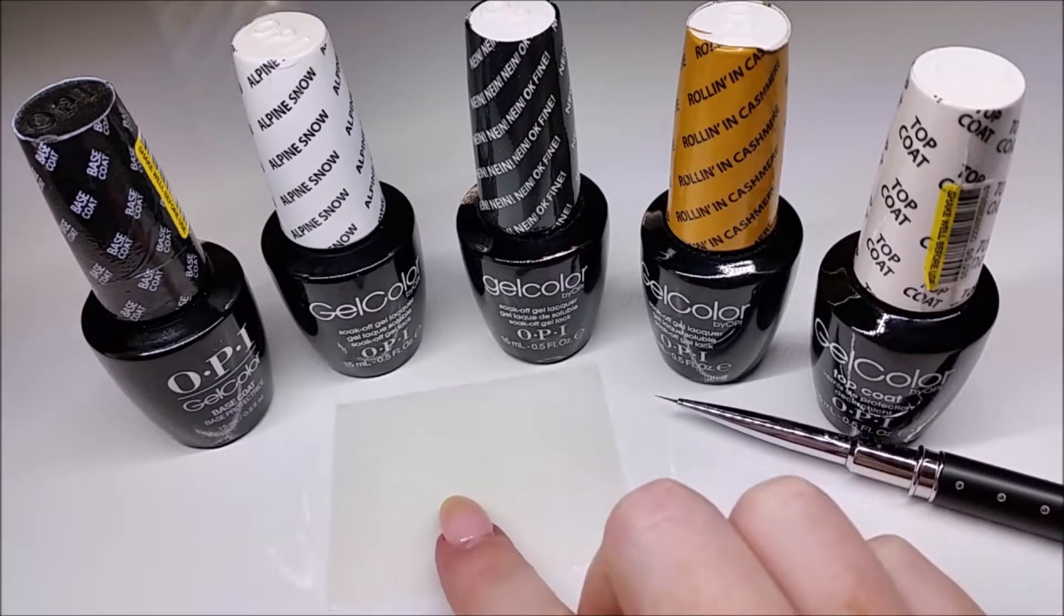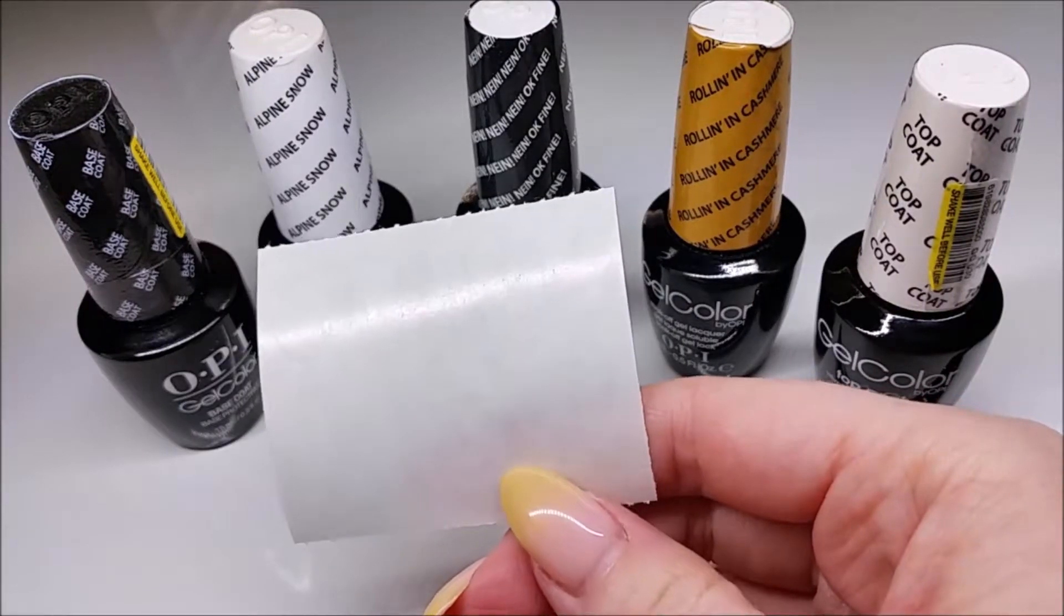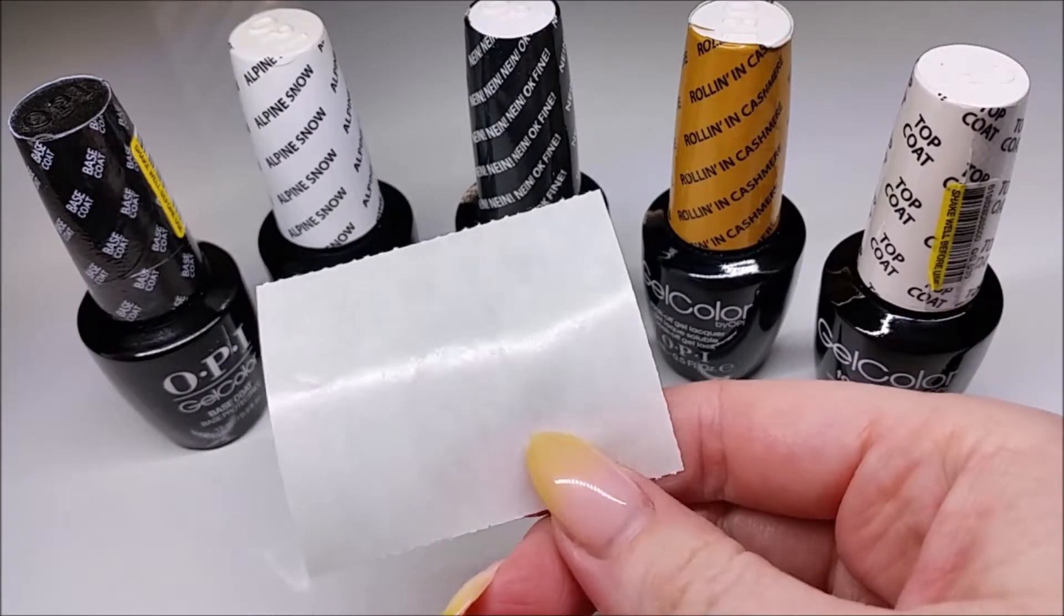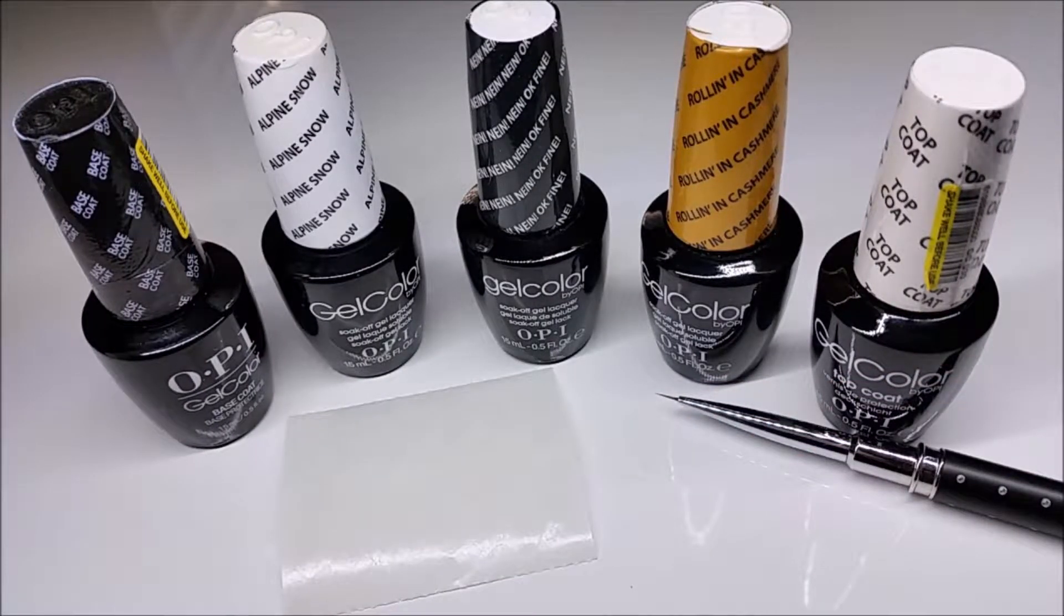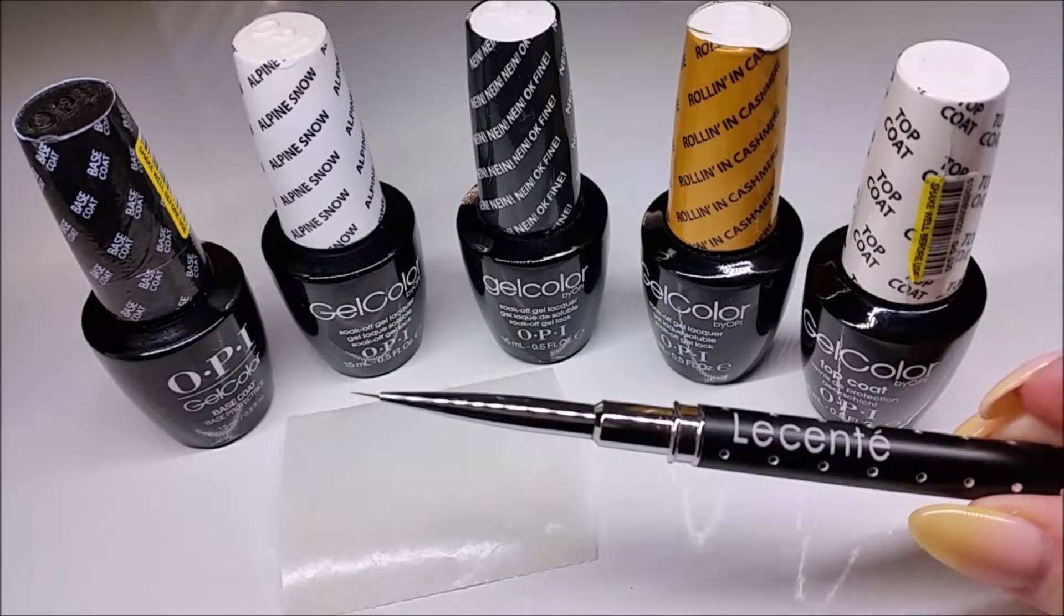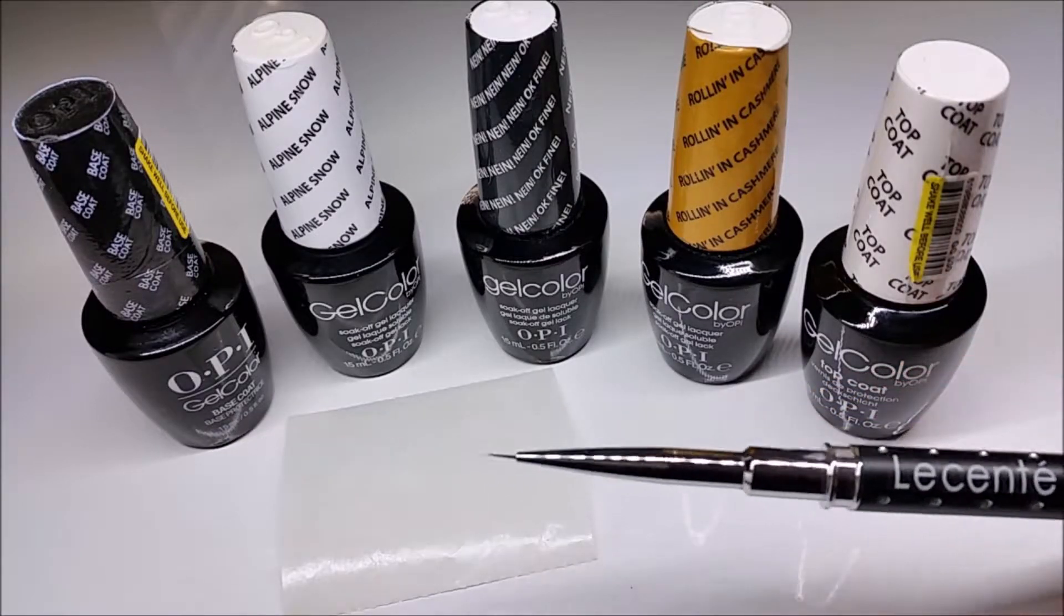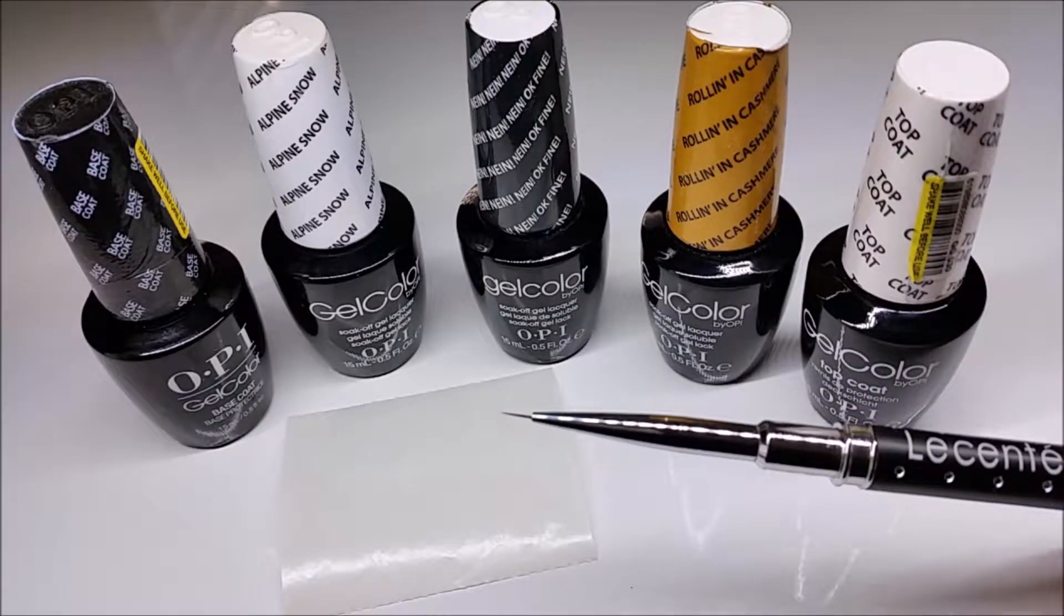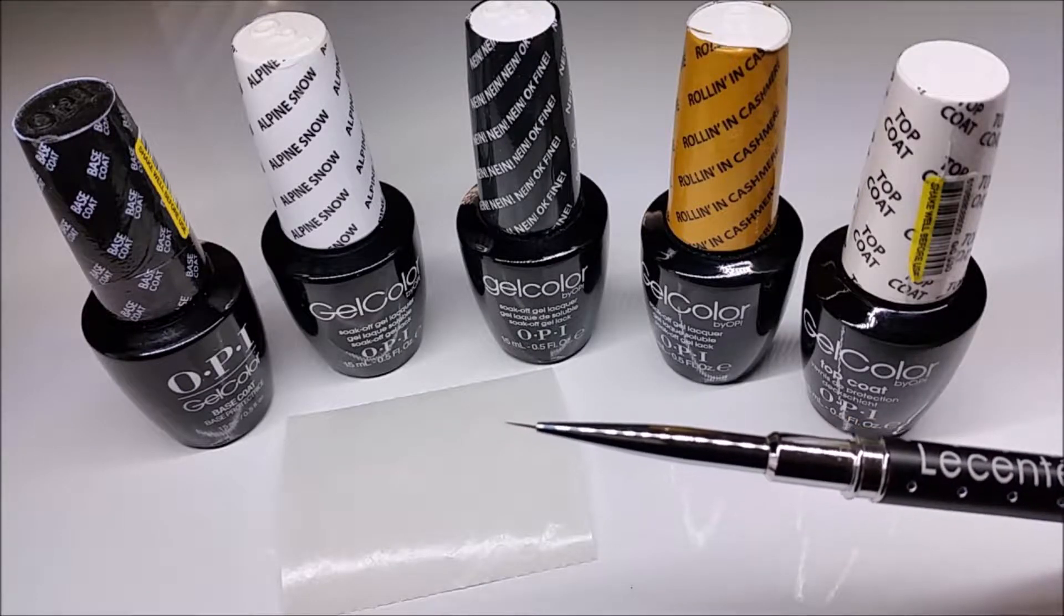You're going to use something as a palette to put little blobs of gel color onto. So I'm just using the plastic back of a nail form for that, or you could use something like tin foil. And then the other thing that you'll need is a very fine detailing brush. So I'm using the Le Sente D2 detailing brush. And as you can see it's got a really fine little brush on it. So that's perfect for marbling.